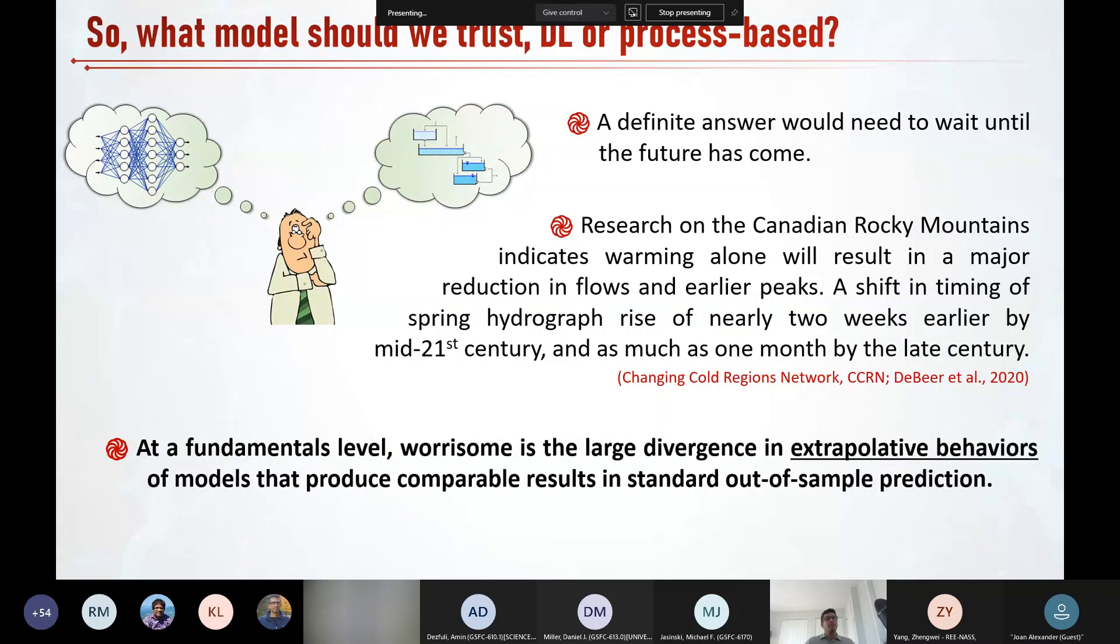Beyond this question, what is worrisome at the fundamental level is the large divergence in the extrapolative behavior between models that produce comparable results in standard out of sample prediction. Also, the follow-up question is then, when and why should we care the most about true out-of-sample prediction, which is nothing but using models in extrapolation beyond the observed data and behaviors used in the model development and calibration? I think a key to addressing this question is to set the modeling purpose upfront.